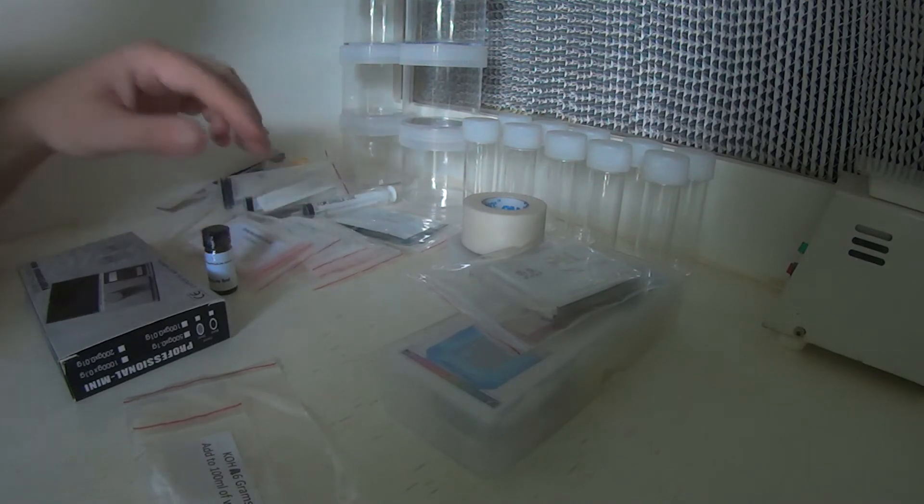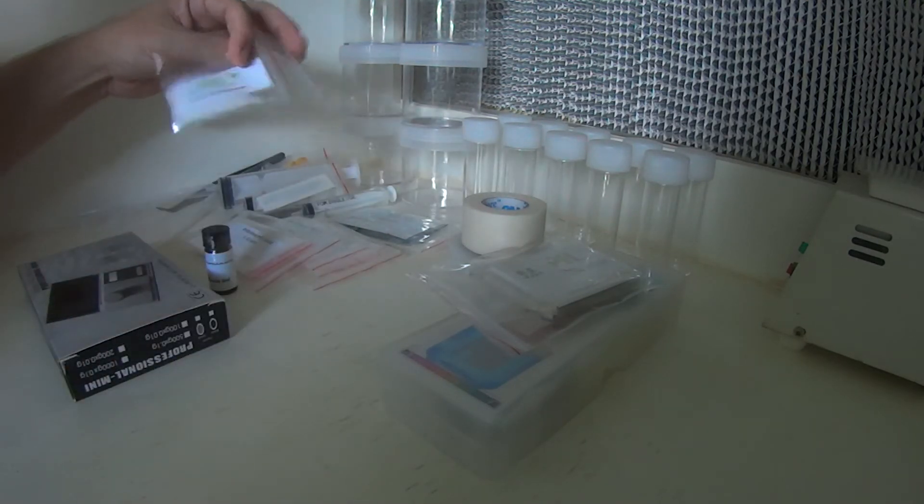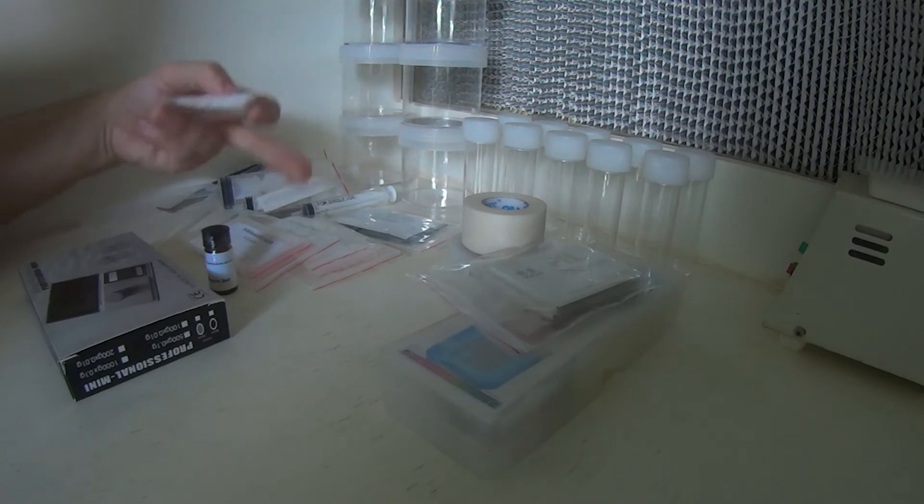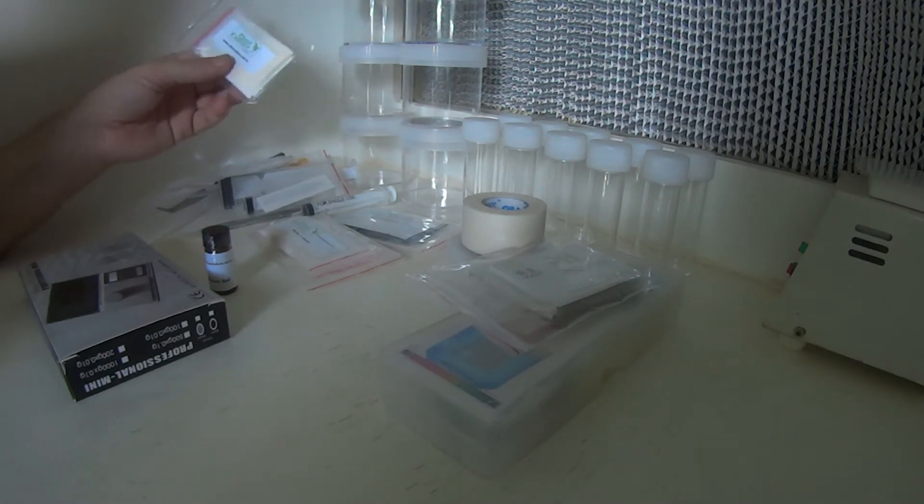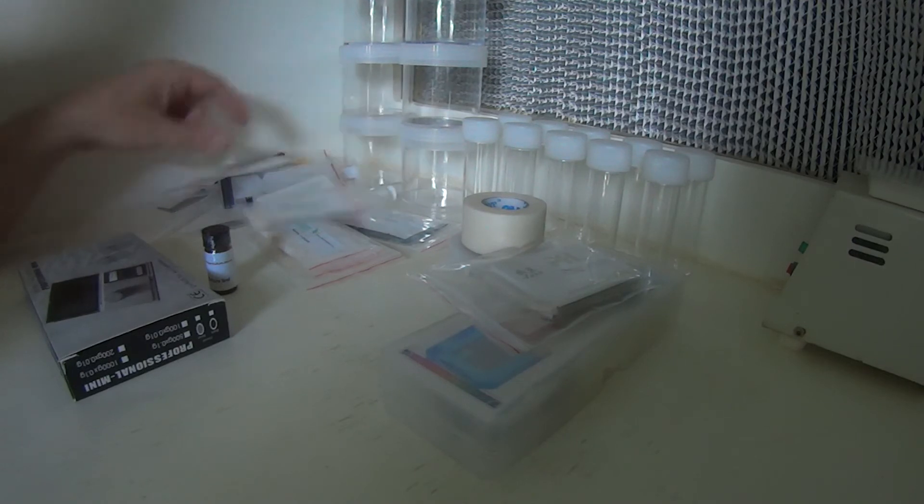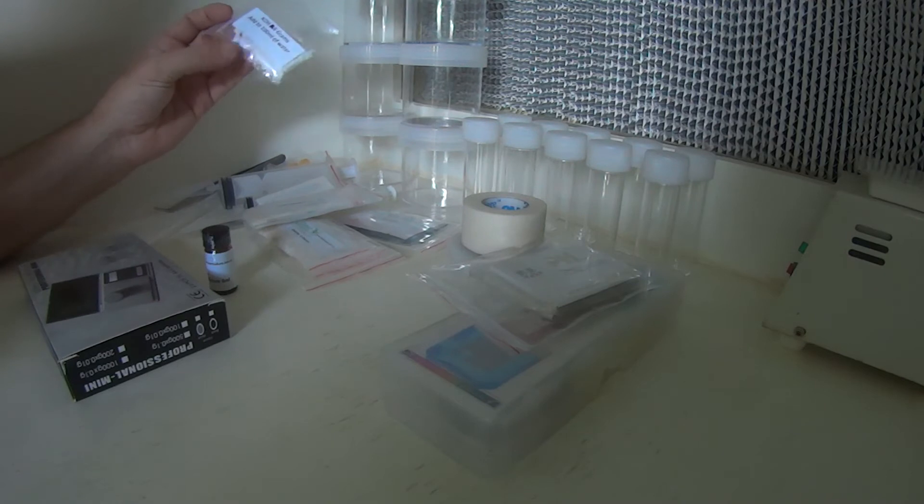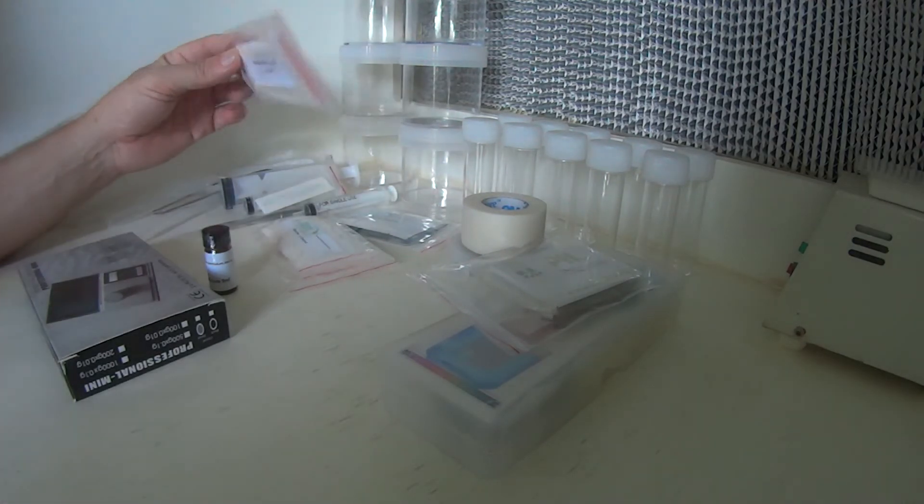And also some KOH. This is what we use to dissolve our plant growth regulators. Most plant growth regulators are not water-soluble, so they require a base or an acid to dissolve them. Simply add the contents of this packet to 100ml of water, and that solution is what you use to dissolve your plant growth regulators.